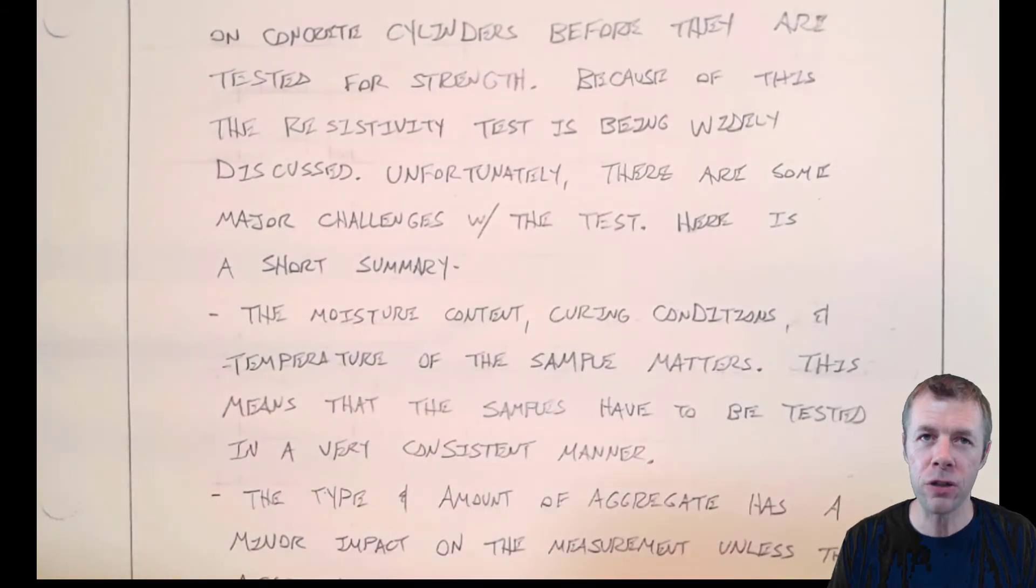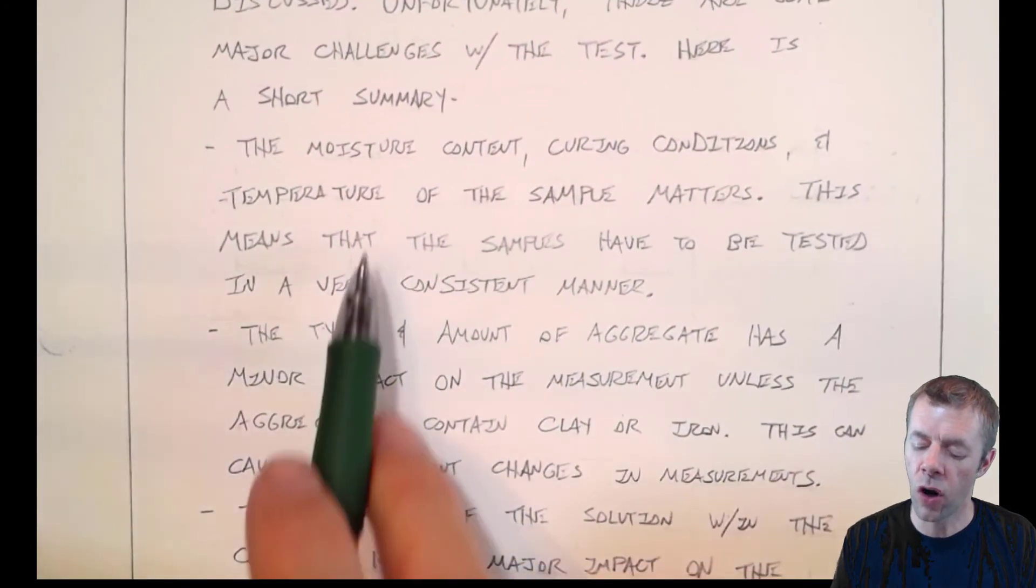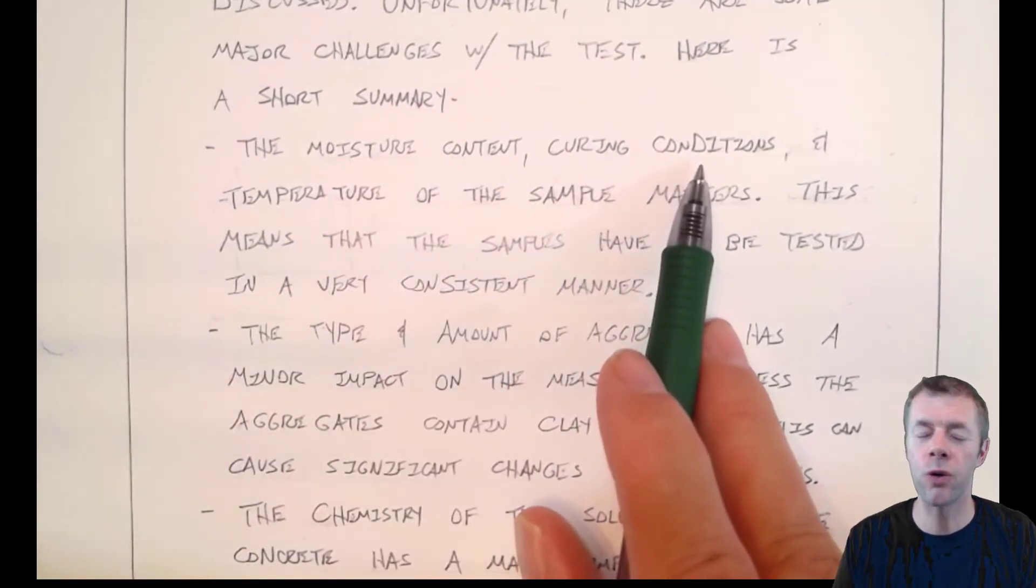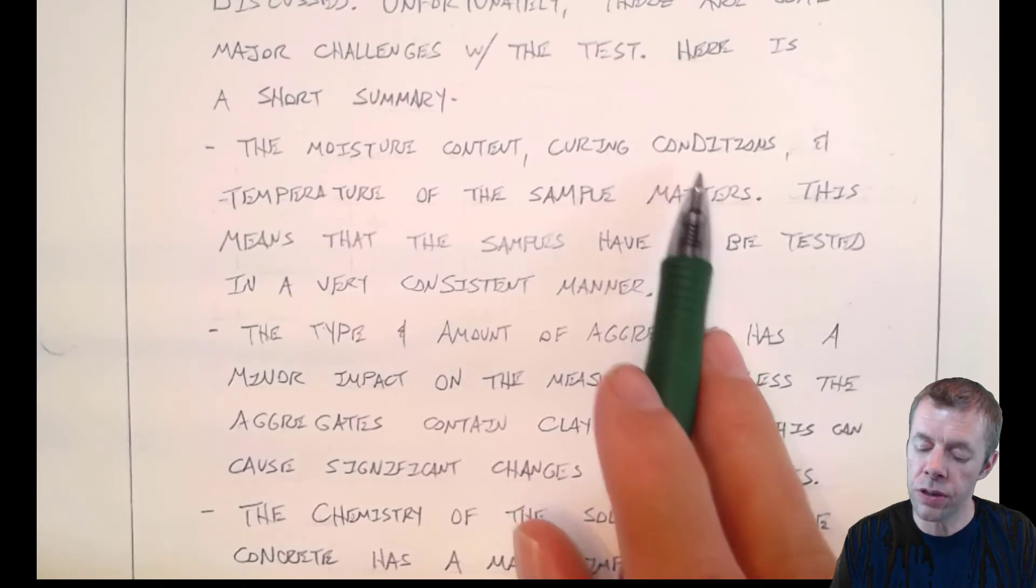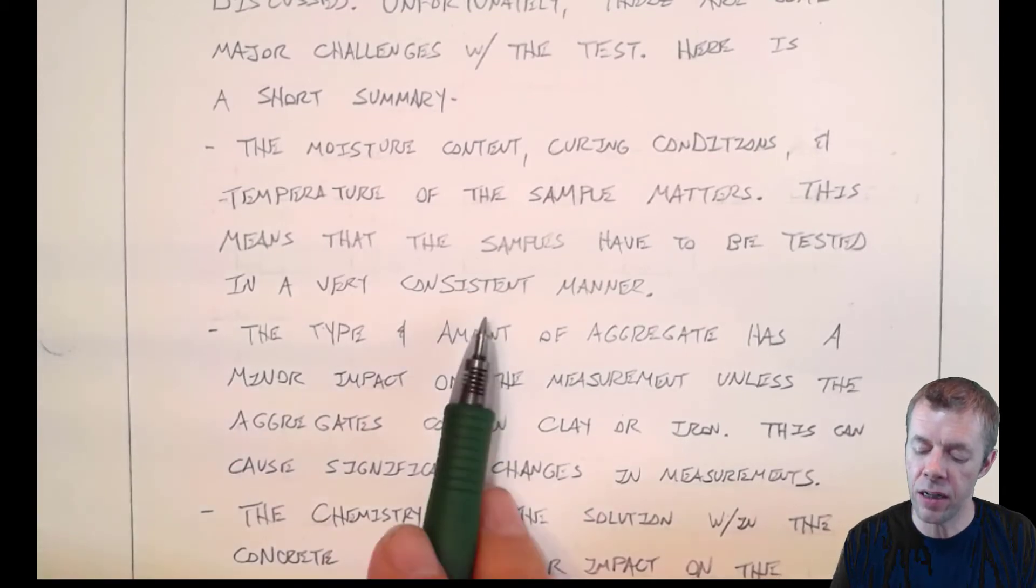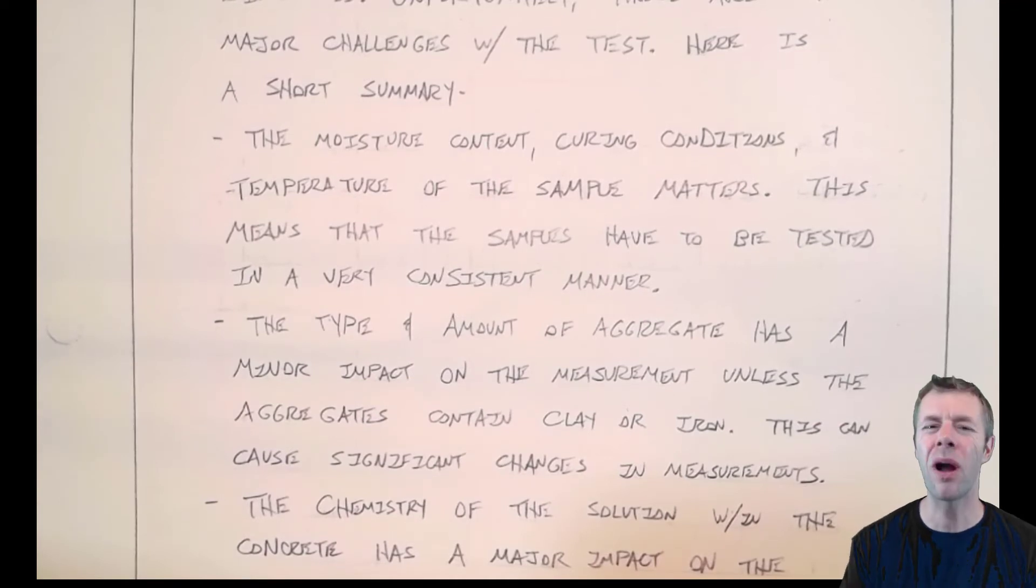Unfortunately, there's a few major challenges with this test, and I'm going to just talk about a few of them. The results are very sensitive to the moisture content, the curing conditions. That's if it's cured in a fog room versus a lime water bath versus a bucket of water versus something else. And also the temperature of the sample. All of these things matter. This means that the samples have to be tested in a very consistent manner. But when I say very consistent, is that right? I think as long as we came up with a standard procedure to do it, we could follow that procedure. It's not too much to ask. But people need to realize, people that are running the test, need to realize that all of these things matter, and you have to pay attention to them.